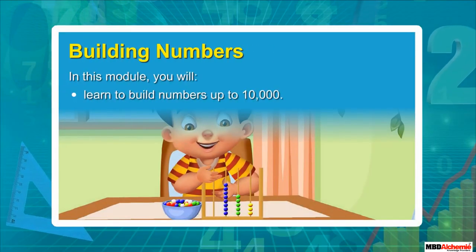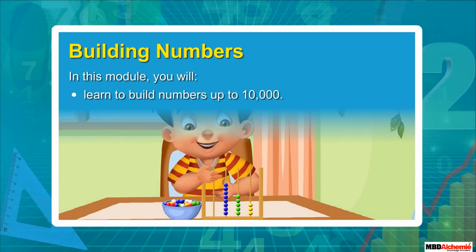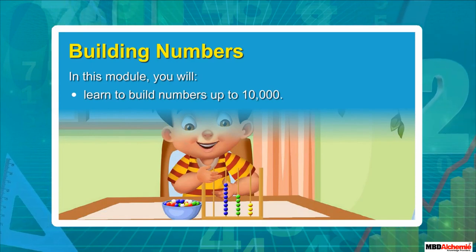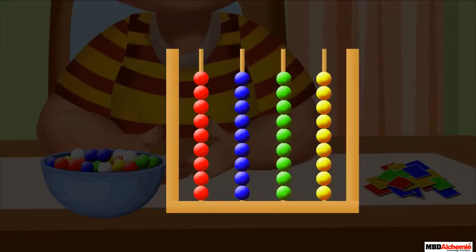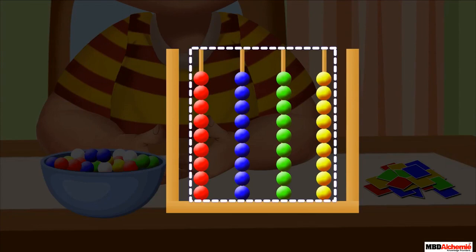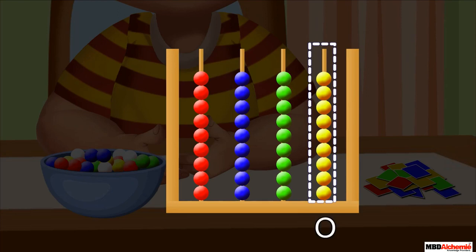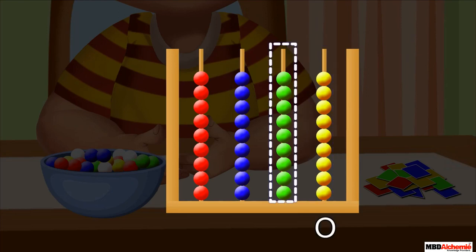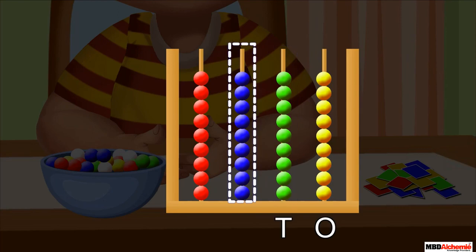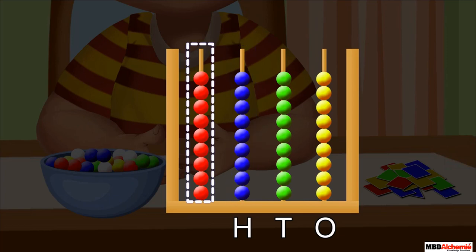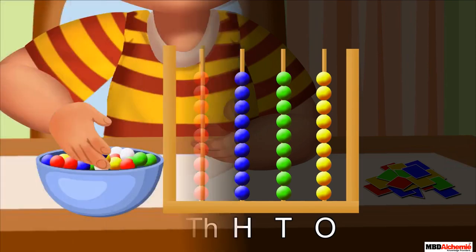Building numbers. In this module, you will learn to build numbers up to ten thousand. This is an abacus. It has four spikes. The rightmost spike represents the ones place, the second spike from the right represents the tens place, the third spike from the right represents the hundreds place, and the leftmost spike represents the thousands place.